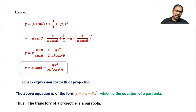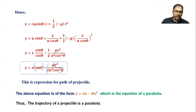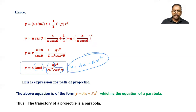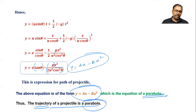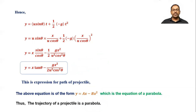This equation can be written as y equals ax minus bx squared, where a equals tan theta and b equals g divided by 2 u squared cos squared theta are constants. This is in the format of ax minus bx squared, which is the equation of a parabola. Therefore, the trajectory of a projectile is a parabolic path. If asked to show this, derive up to this equation and state this conclusion.